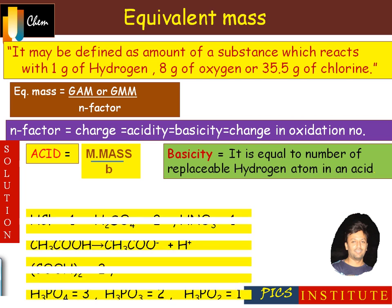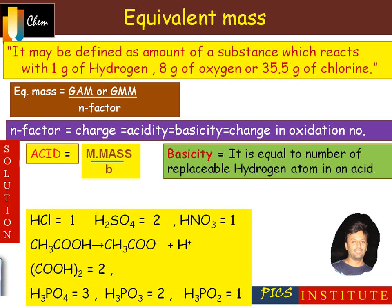Similarly, the basicity of various acids: HCl is 1, H2SO4 is 2, HNO3 is 1, acetic acid is 1, oxalic acid is 2, H3PO4 is 3, H3PO3 is 2, and H3PO2 has a basicity of 1.